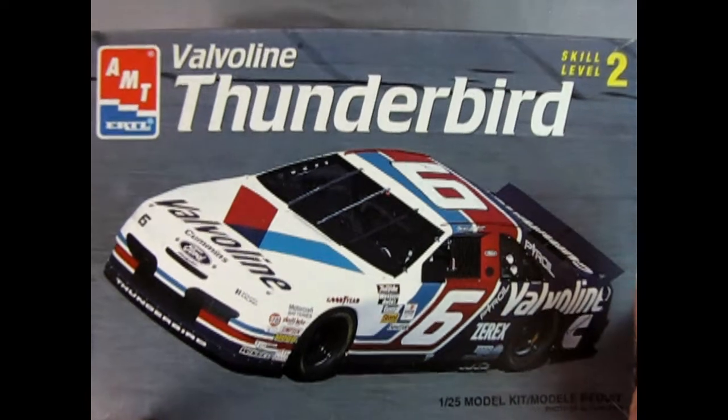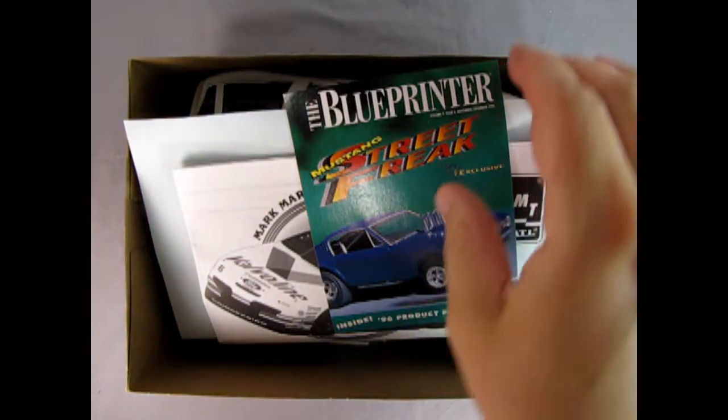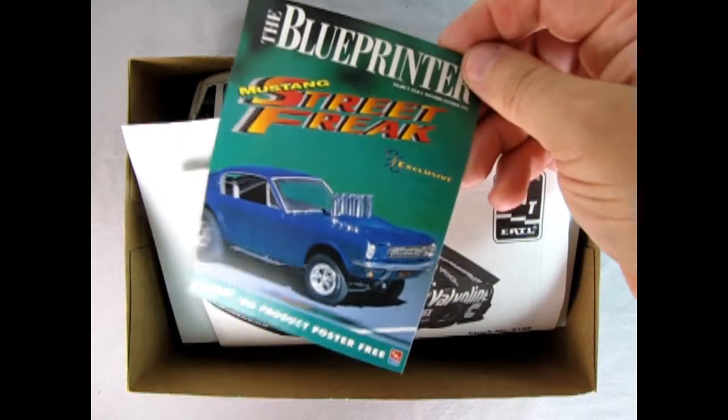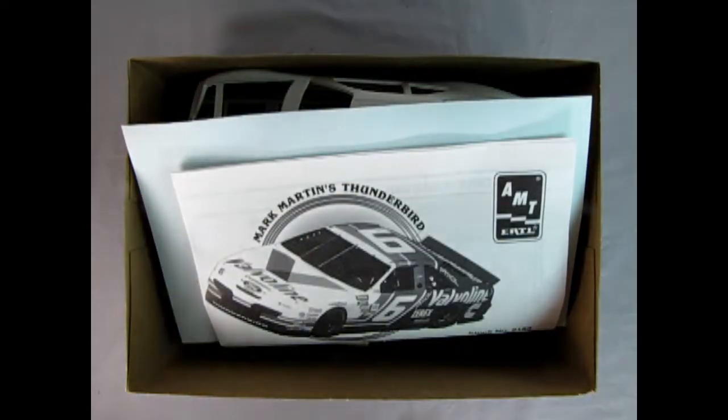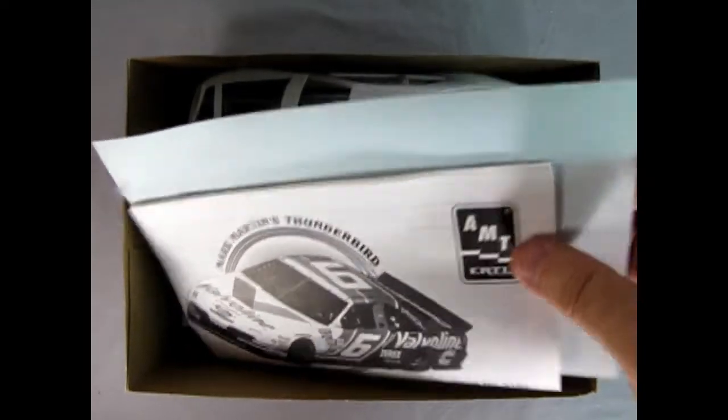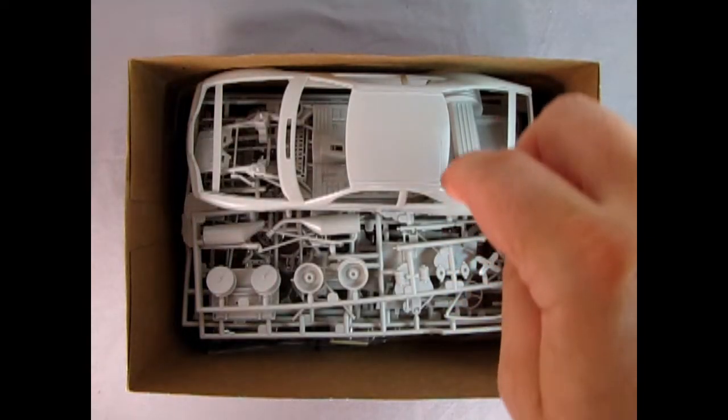Now let's just take the lid off this wonderful model and see what we got inside. Whoa, look at this, an old blueprint with the Mustang Street Freak on there. Who had that one? Let us know in the comments down below. So here we find out now that this is Mark Martin's Thunderbird and we get our instruction sheets and our decals which Danny the dog will go over in an upcoming segment.